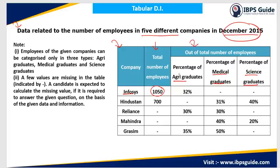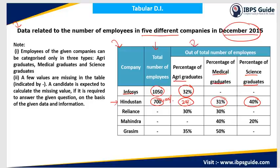For example, Infosys has a total of 1050 employees. If 32 percent are agricultural graduates, we can find that number. Similarly, for Hindustan with 700 total employees: medical is 31%, science is 40%, so agriculture becomes 29%. If you know any two of the three categories — agriculture, medical, or science — you can derive the third, since the total is 100%.